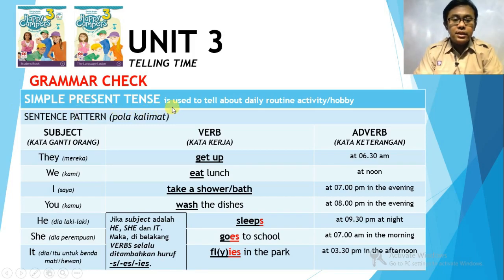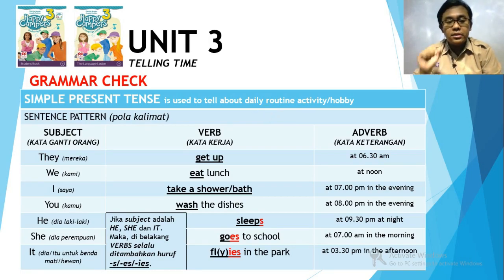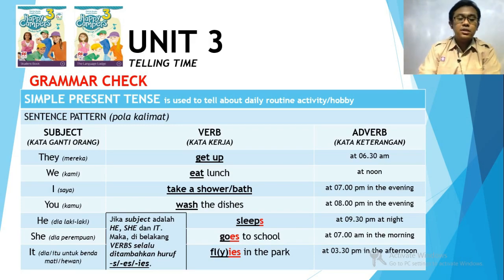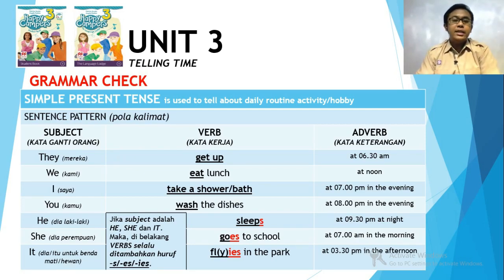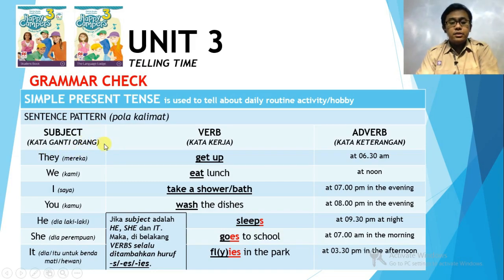Simple present tense is used to tell about daily routine, activity, or hobby. It's the simplest tense in English — the most simple tense. This is the sentence pattern or formula for simple present tense. Making a sentence is actually similar to Indonesian — it starts with a subject. In English we have seven kinds of subjects: they, we, I, you, he, she, it.